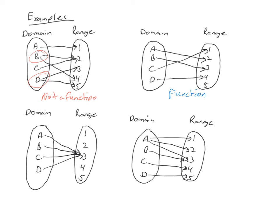Something that sometimes causes confusion: in this third example, every element in the domain is being assigned to three. In terms of a function, the key part of the definition is that each element of the domain is assigned one element of the range — it says nothing about multiple domain values being assigned the same range value. That's okay. So this would be a function. In the last one, A has been assigned to three different locations, and so that is not a function.